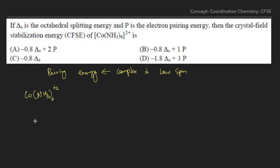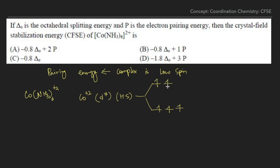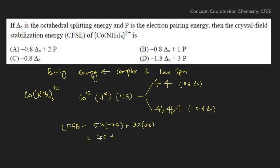For Co(NH₃)₆²⁺, cobalt is in the +2 state, making it a d7 system. NH₃ behaves as a weak field ligand here, so this is a high spin complex. Filling seven electrons in high spin manner: five go into t2g and two into eg. The CFSE is 5 × (−0.4·Δo) + 2 × (0.6·Δo) = −2.0·Δo + 1.2·Δo = −0.8·Δo.